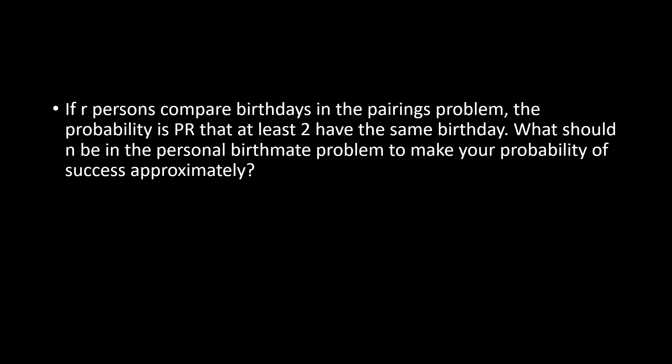The third problem: in the pairing problem, if the probability that at least two persons have the same birthday is P(r), what should n be in the birthday mate problem to make your probability of success approximately equal to P(r)? Basically, you want to relate these two problems. In the pairing problem, r persons are comparing birthdays with each other.